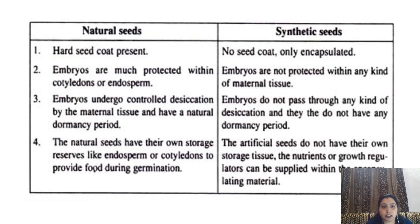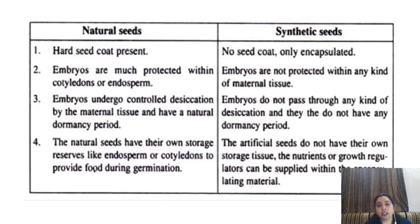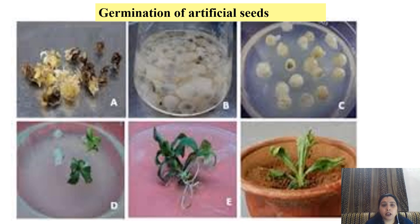Difference between natural and synthetic seeds: In natural seed, a hard seed coat is present, while in synthetic seed it is only encapsulated. Embryos are much protected within cotyledons or endosperm in natural seeds, while in synthetic seeds embryos are non-protected within any kind of maternal tissue. In natural seed, embryos undergo controlled desiccation by the maternal tissue and have a natural dormancy period, while in synthetic seeds embryos do not pass through any kind of desiccation and they do not have any dormancy period. The natural seeds have their own storage reserves like endosperm or cotyledons to provide food during germination, while in artificial seeds they do not have their own storage tissue. Nutrients or growth regulators can be supplied by artificial endosperms in synthetic seeds. Here, germination of artificial seeds is shown. After the germination stage, that means formation of radicle, they are planted in a pot and a new plant is generated by the help of artificial seeds.